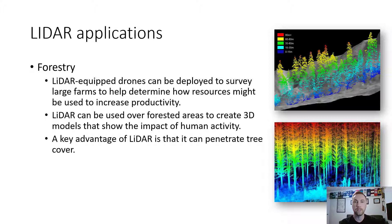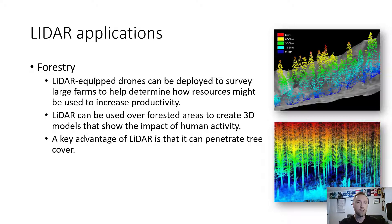Forestry is another industry that relies on LiDAR. LiDAR-equipped drones can be deployed to survey large forest areas to help determine how resources might be used to increase productivity — finding out which types of trees are thriving in certain environments and which are not. LiDAR can be used over forested areas to create 3D models showing the impact of human activity like logging, which is a major industry in the Pacific Northwest. A key advantage of LiDAR is that it can penetrate tree cover — the pulses don't stop at the top of the canopy; they descend all the way to the ground, allowing first, second, third, and fourth returns to be modeled, showing canopy thickness, height, and the surface below.